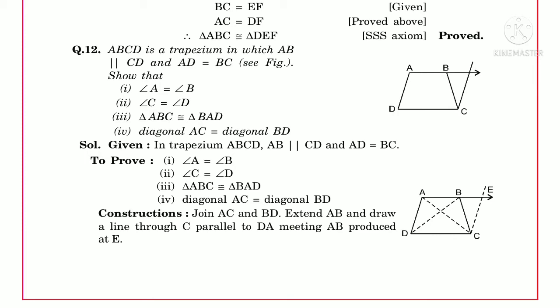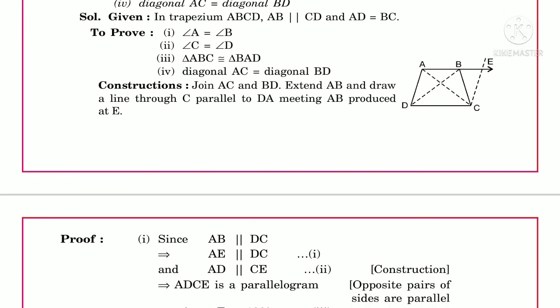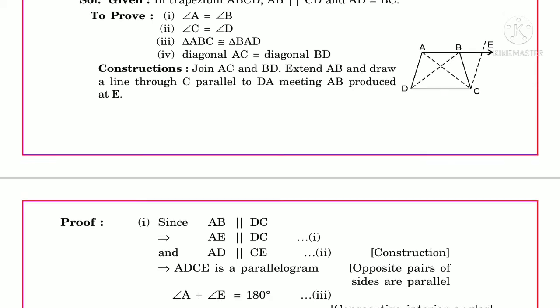We join AC and BD, extend AB, and draw a line through C parallel to DA. We extend the line AB and through C we draw a line parallel to AD. When we draw this line, it intersects the extended AB at a point we denote as E.